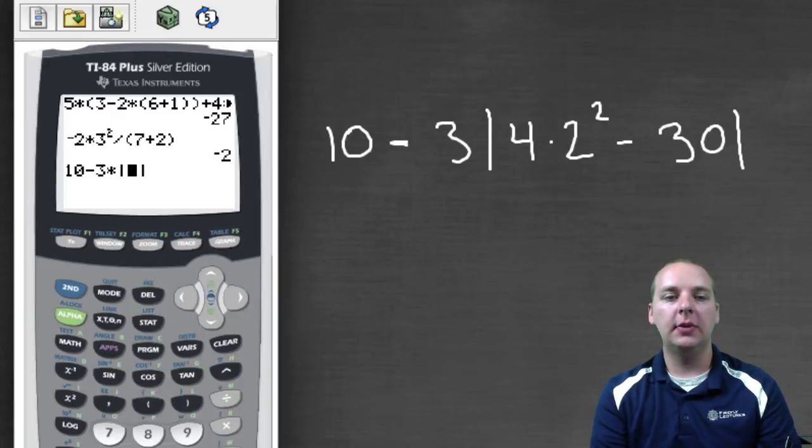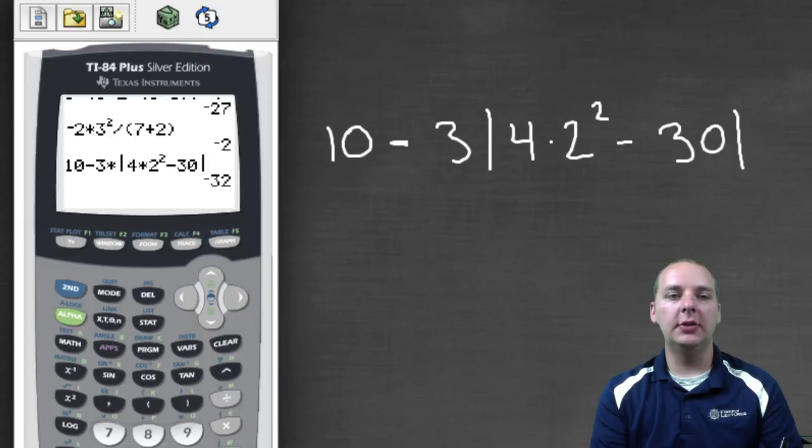Okay, so we'll have 3 times the absolute value of 4 * 2² - 30. Okay, and so just make sure everything looks okay. This looks exactly like the way I have it. And we'll push enter, and we get an answer of negative thirty-two. So this will be our final answer.